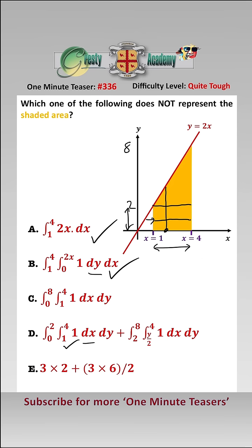And then from Y equals 2 to 8, we would enter here at X equals Y over 2, and we would exit at X equals 4, and that would be from Y equals 2 to 8, so that bit's correct, so D is correct.